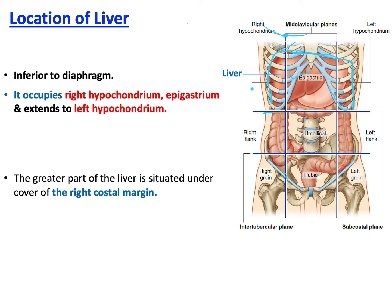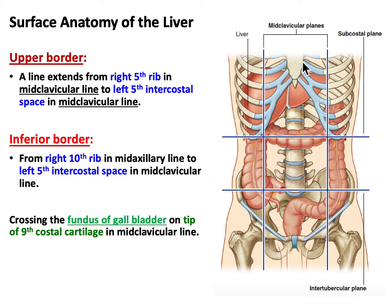Looking at the divisions of the abdomen, the liver is located in the right hypochondrium and the epigastric region, and extends to the left hypochondrium. It spans three regions — from the right hypochondrium through the epigastric region to the left hypochondrium — and the greater part of the liver is situated under the right costal margin.